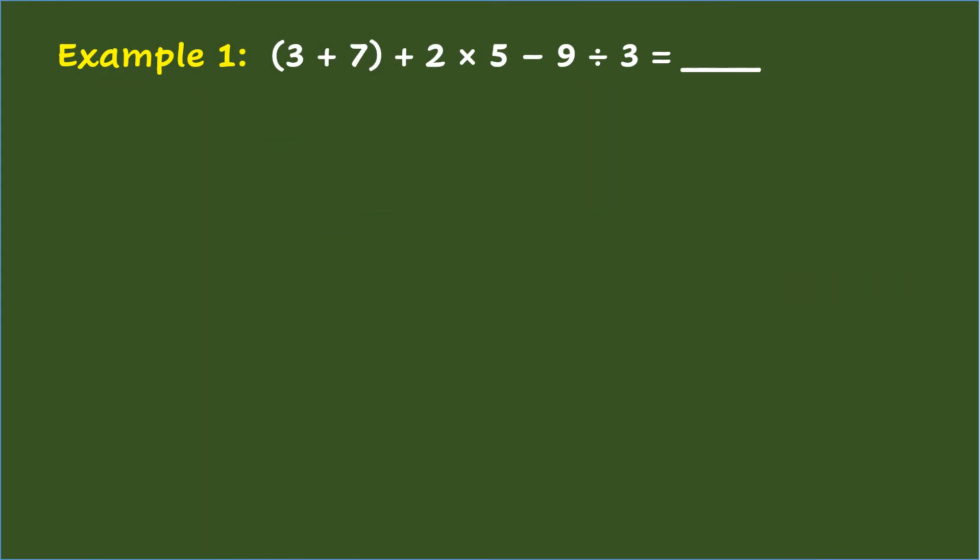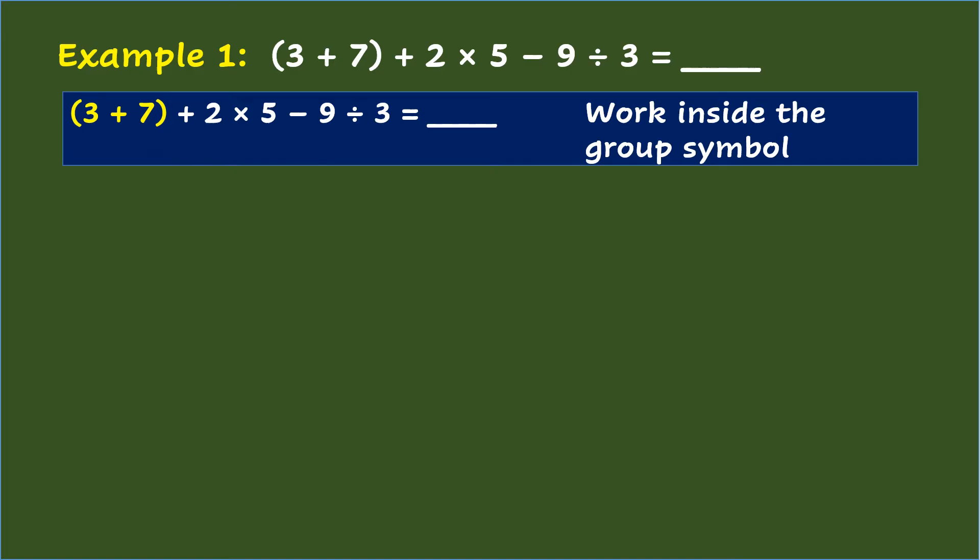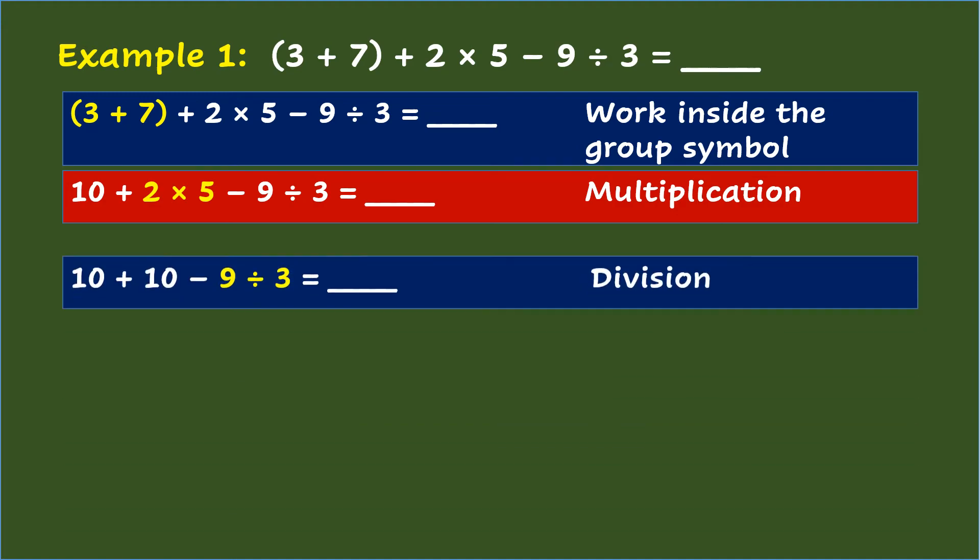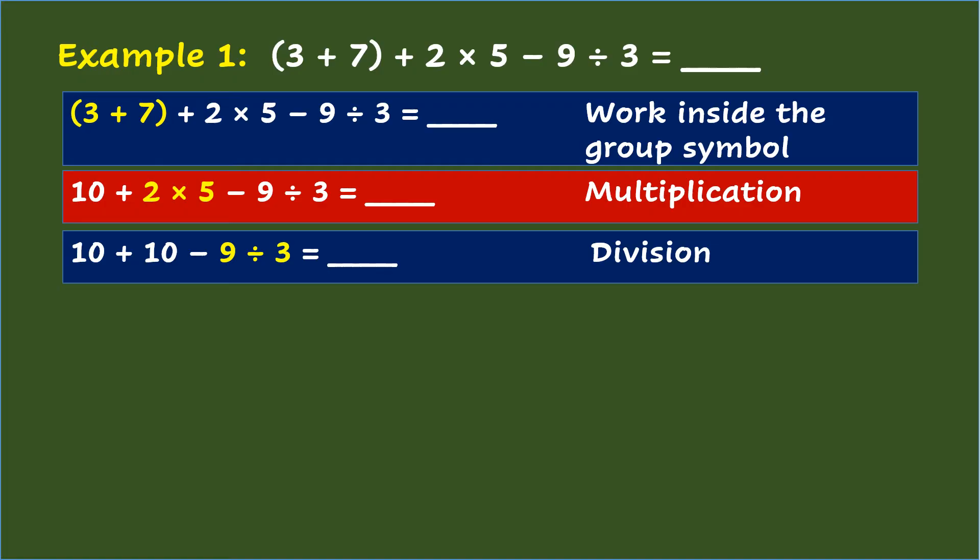Example 1: (3 + 7) ÷ 2 × 5 - 9 ÷ 3 equals blank. Following the GEMDAS Rule, first step is to work inside the group symbol. So that's 3 plus 7 equals 10. Second is 2 times 5 equals 10. Third is do the division. So that's 9 divided by 3 equals 3.